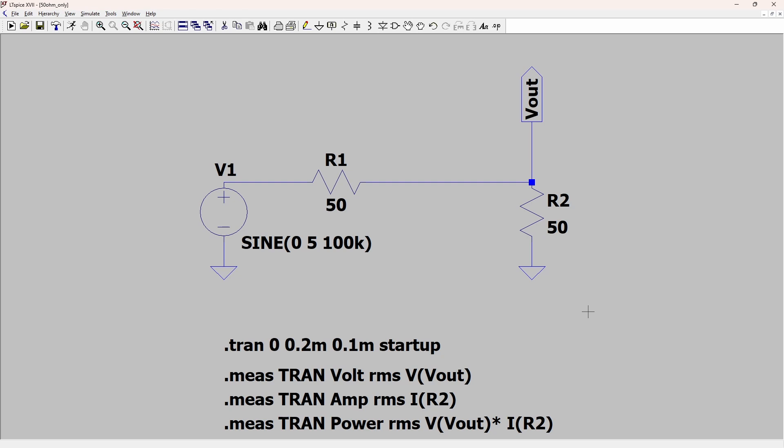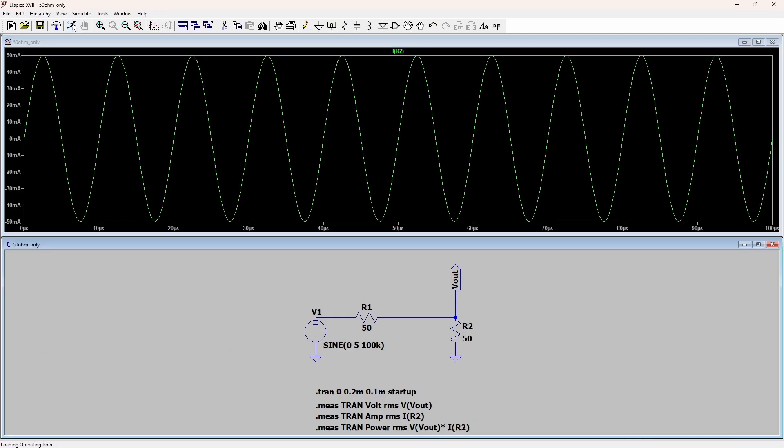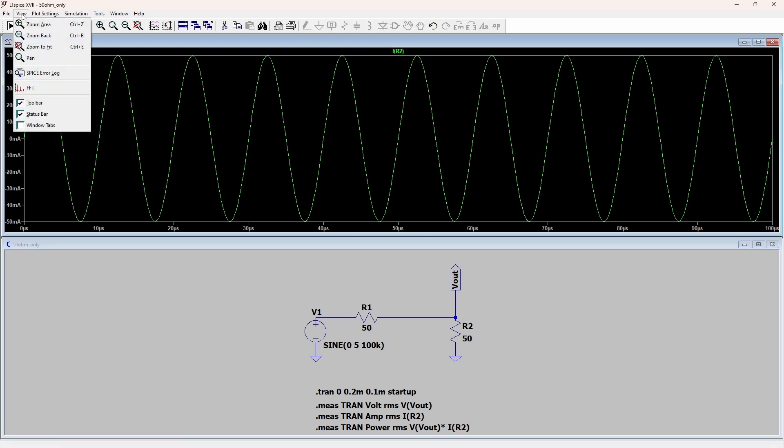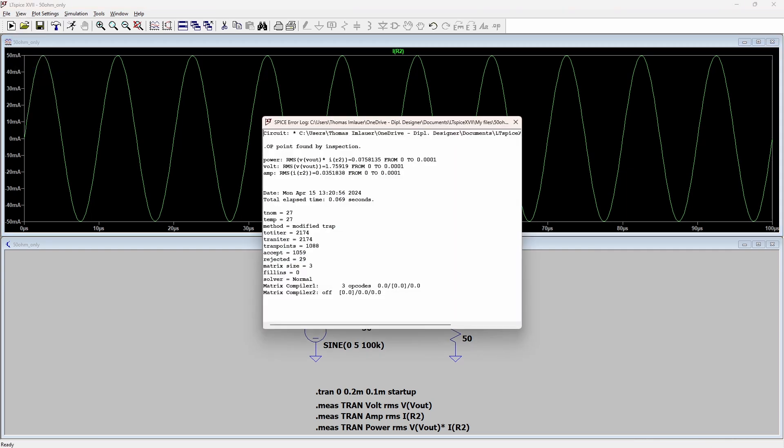Here is our simulation for testing oscilloscopes and the probes. We have 50 ohm across the output. If I run this circuit now, the simulation, we have in my log file: we are measuring for ampere 35.18, for volt 1.75919, and we have a power consumption of 75.81 milliwatt. We will put this information up on top for the measurement now of the oscilloscope and the oscilloscope probes and current probes.